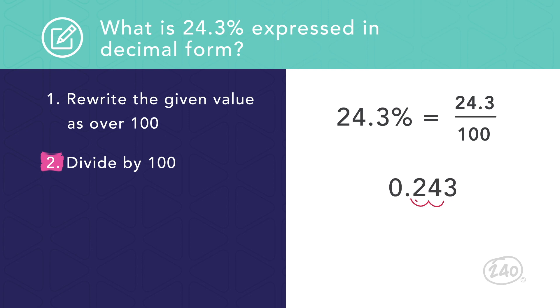To divide by one hundred, move the decimal two places to the left. This gives us zero point two four three. That shows us that twenty four point three percent is equal to zero point two four three.